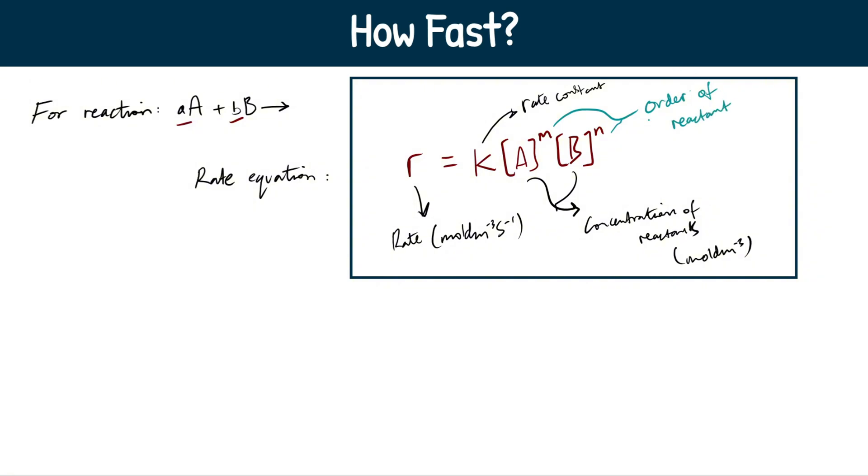And this is referred to as order of reactants. So rate equals our rate constant multiplied by the concentration of reactant to the power of the order in each case.